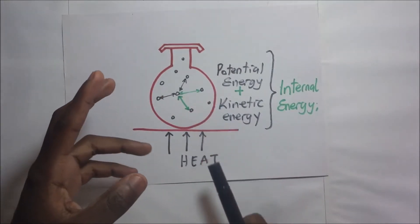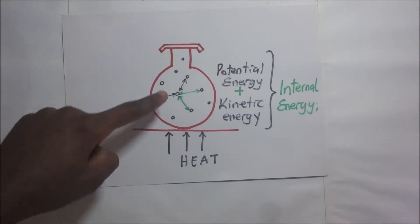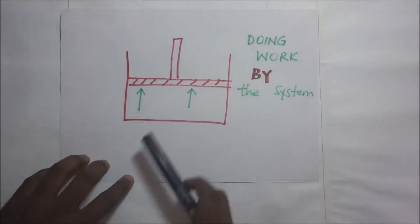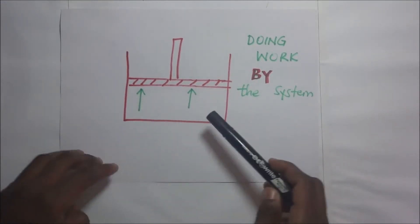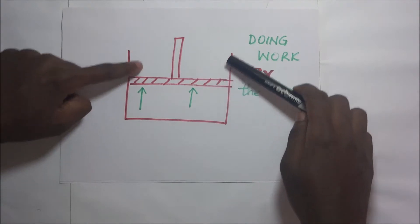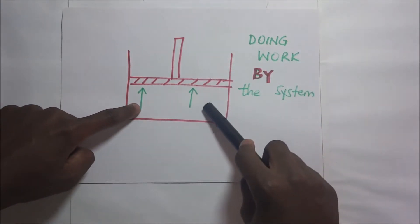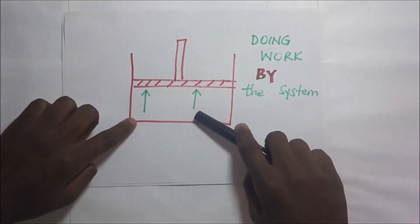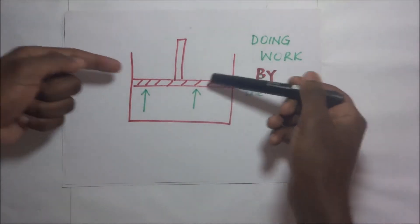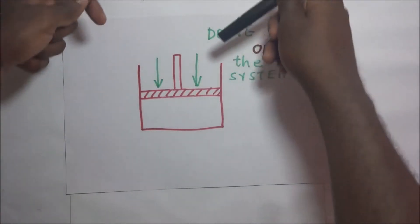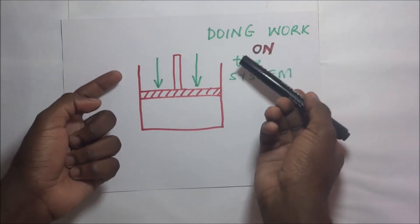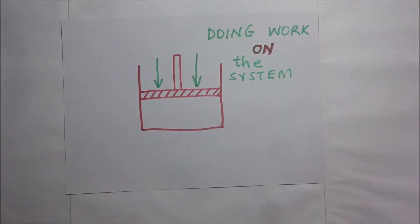After the internal energy has changed, either work will be done on the system or work will be done by the system. If I provide heat and the gas expands, pushing this piston upwards, then it is the system doing work on the surrounding — it is pushing back the surrounding. But it can happen the other way around: if this piston is pushed inwards and the gas is compressed, it means the surrounding is doing work on the system.